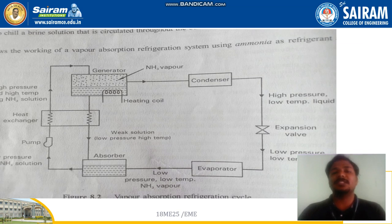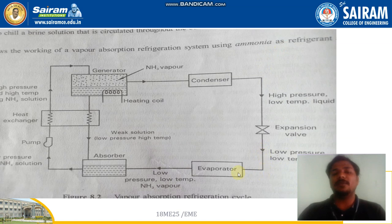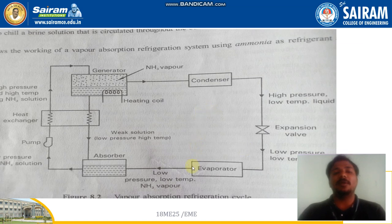The cabinet is the system inside the refrigerator. Whenever we keep any item inside, it will be at surrounding temperature and will carry heat. The evaporator absorbs that heat. Initially the ammonia refrigerant is at low temperature in liquid form, but when it absorbs the heat it changes phase from liquid to vapor, because heating a liquid causes it to vaporize.